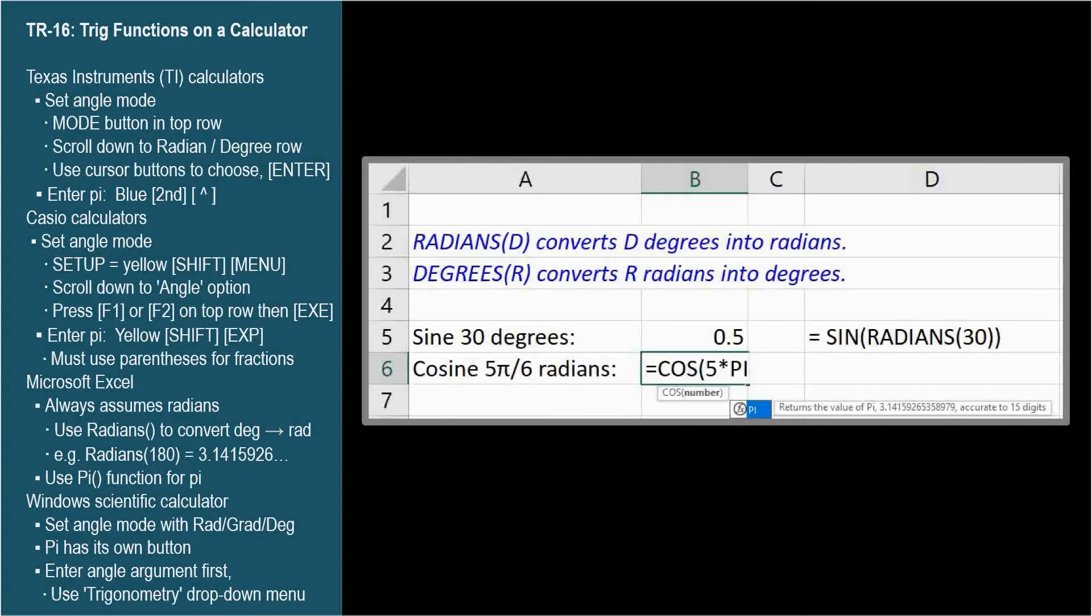So, type pi, open and close parenthesis, because the pi function doesn't need an argument, forward slash for division, 6, close parenthesis, and enter. And the answer is negative 0.866.